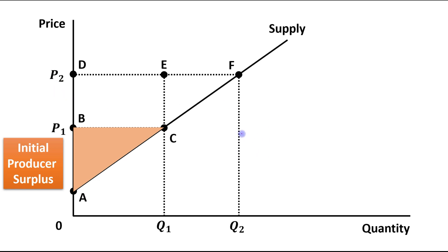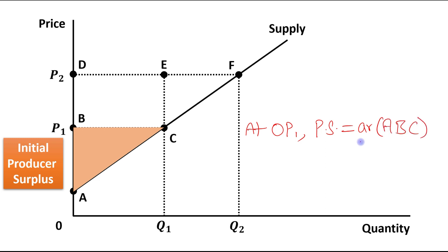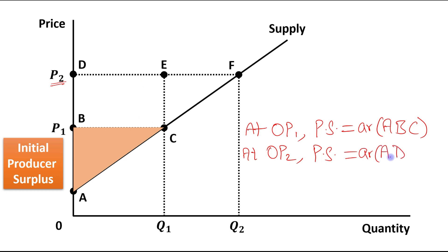So let's first understand that at price OP1, producer surplus was area A, B, C. If we see the producer surplus at the new price OP2, it is above the supply curve and below the new price level — that means area A, D, F.